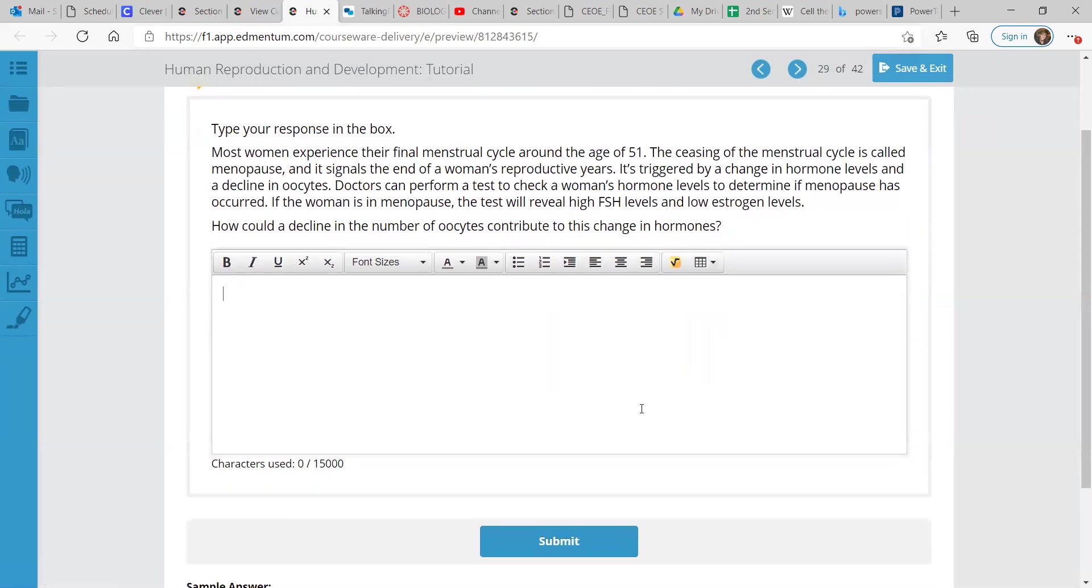Alright, so question. Most women experience their final menstrual cycle around age 51. The ceasing of the menstrual cycle is called menopause, and it signals the end of a woman's reproductive years. It's triggered by a change in hormone levels and a decline in oocytes. Doctors can perform a test to check a woman's hormone levels to determine if menopause has occurred. If the woman is in menopause, the test will reveal high FSH levels and low estrogen levels. How could a decline in the number of oocytes contribute to this change in hormones?